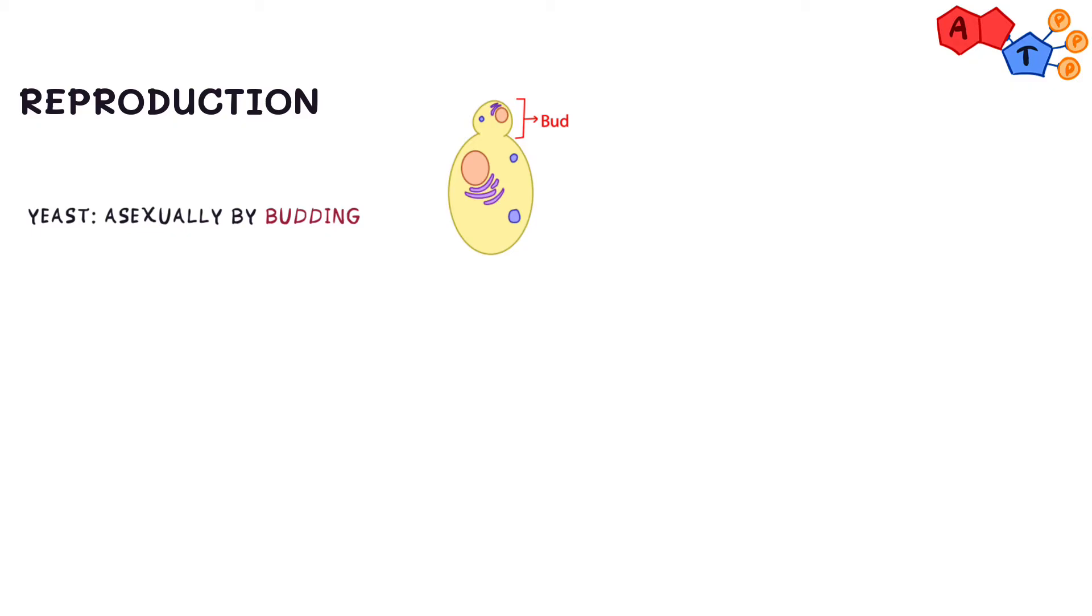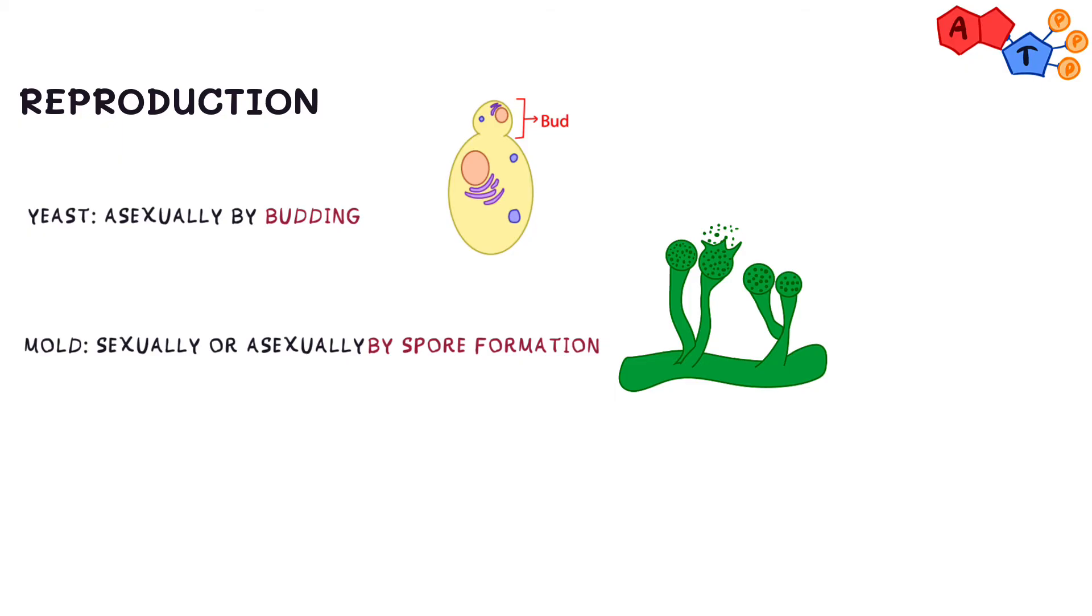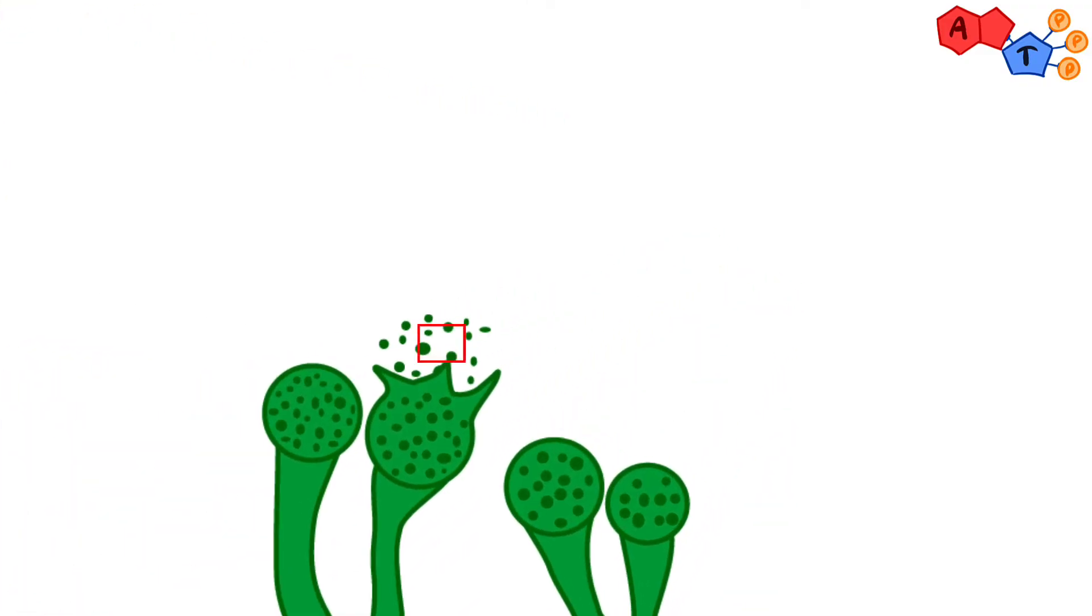Molds, on the other hand, can reproduce sexually or asexually. However, the most common way is asexually through formation of spores. Fungal spores are different than bacterial endospores and serve a different purpose, which is reproduction. These spores are microscopic particles that can be transported by the wind and water to various different locations to produce more fungi. Inhaling these fungal spores can cause serious infections like pneumonitis.